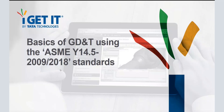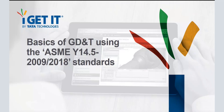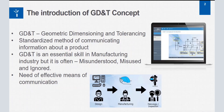The topic of my session is basics of GD&T using the ASME Y14.5-2009 and 2018 standards. Let us first understand the introduction of GD&T concept. The full form of GD&T is Geometric Dimensioning and Tolerancing. It is a standardized method used to communicate information about any product, conveyed through the process of product design right from design to manufacturing.